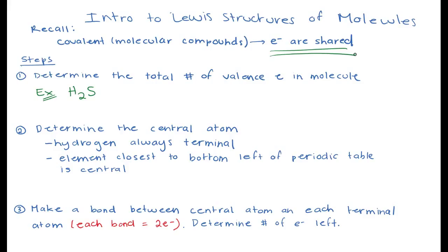The reason we want to look at the Lewis structure of the overall molecule is for several reasons. First, to figure out how the atoms are bonded together. And second, it can start to give us ideas about what the molecule looks like in three dimensions based on how they're bonded together. We have a few steps for determining the Lewis structure. Let's look at an example: dihydrogen sulfide gas. The first thing we want to do is determine the total number of valence electrons in the molecule.